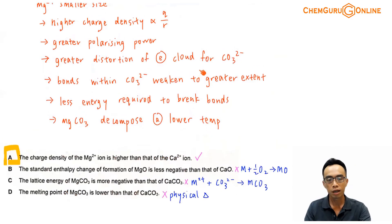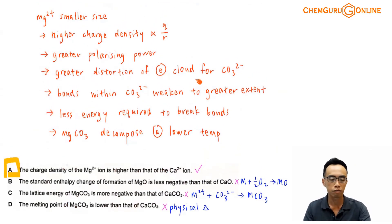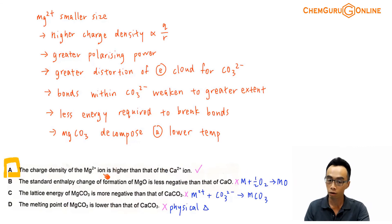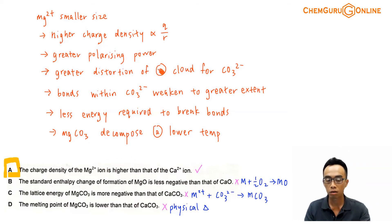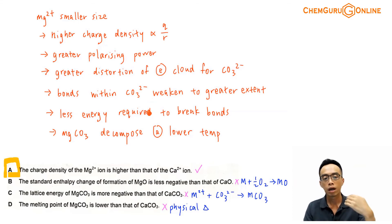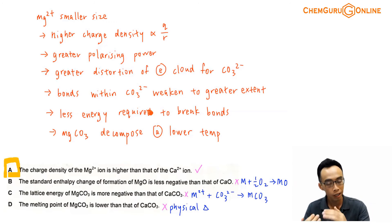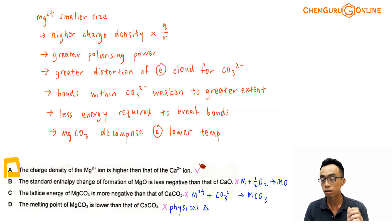Let us run through options A, B, C, and D to see which one makes more sense. For option A: the charge density of Mg2+ ion is higher than that of Ca2+ ion. This is true, and in fact this is the reason why Mg2+ has a higher polarizing power, can distort the electron cloud of the carbonate to a bigger extent, weakens the bonds to a bigger extent, and causes it to decompose more easily at a lower temperature. So option A is a likely answer.